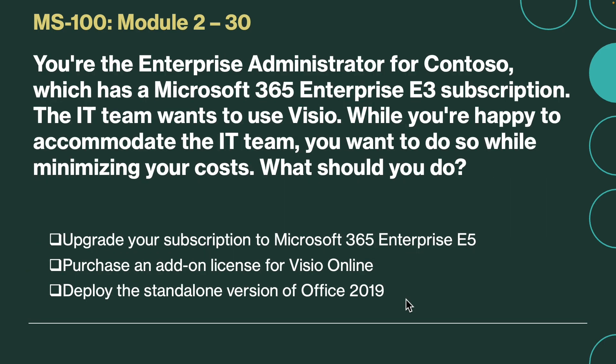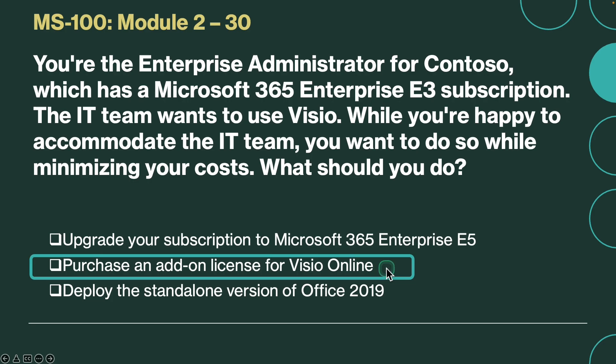Next question. You are the enterprise administrator for Contoso, which has a Microsoft 365 Enterprise E3 subscription. The IT team wants to use Visio. While you are happy to accommodate the IT team, you want to do so while minimizing your cost. What should you do? The correct answer is purchase an add-on license for Visio Online. To provide this functionality while minimizing cost, you should purchase an add-on license for Visio Online.